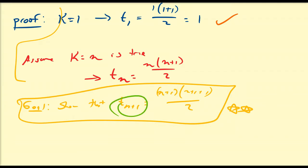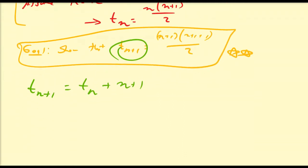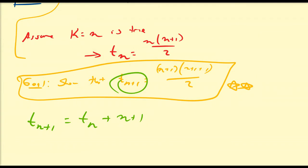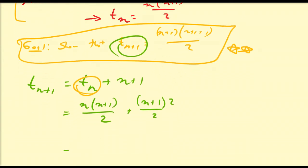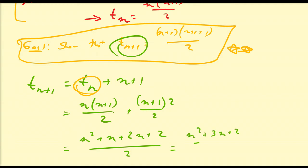So what is t(n+1)? We know t(n+1) equals tn plus n plus 1. We've already assumed tn equals n times n plus 1 over 2. Adding the n plus 1 term — multiplying top and bottom by 2 — we get n squared plus n plus 2n plus 2, all over 2, which simplifies to n squared plus 3n plus 2 over 2.